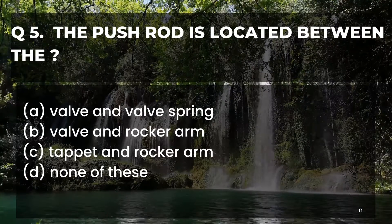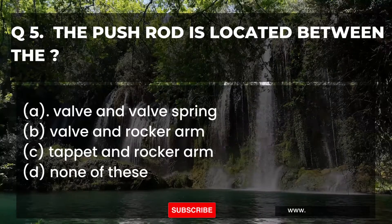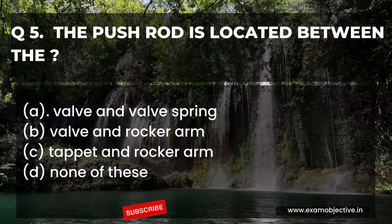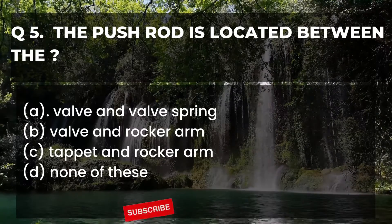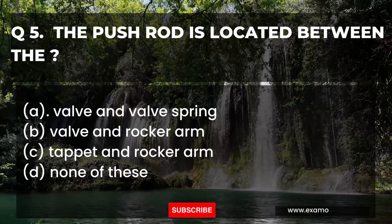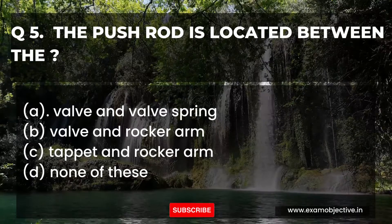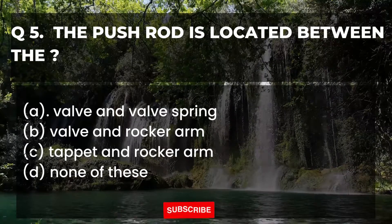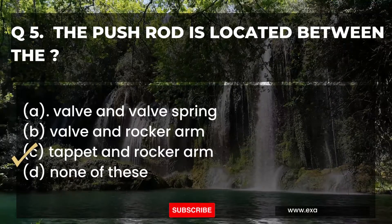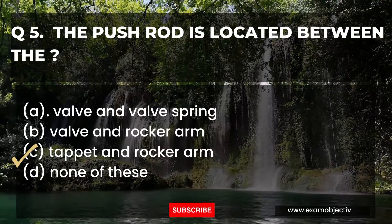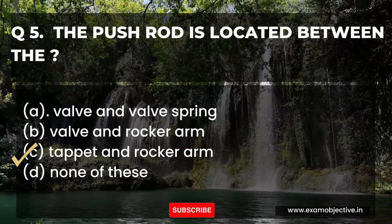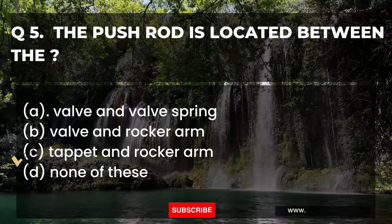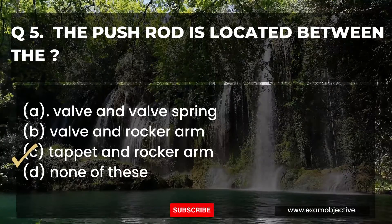Question number five: The push rod is located between — option A: valve and valve spring, B: valve and rocker arm, C: tappet and rocker arm, D: none of these. The answer is option C, tappet and rocker arm. The push rod is located between the tappet and rocker arm.